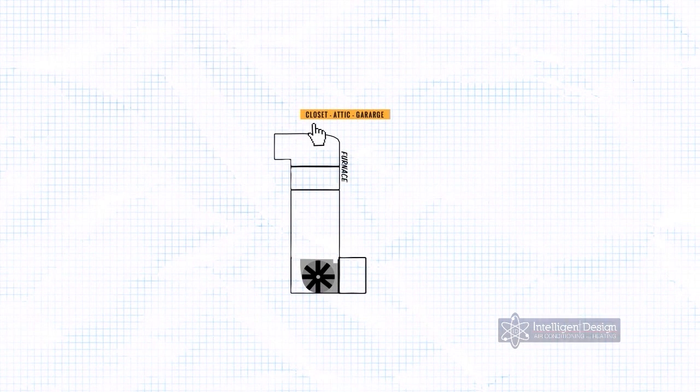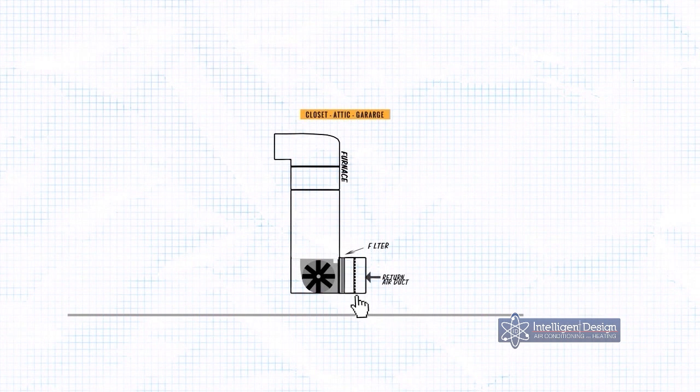Now, if your furnace is in a closet, it typically sits up on a platform and sucks air from underneath the furnace. The platform typically has a grill on the front or side of it where the air is pulled from the house into the furnace closet.